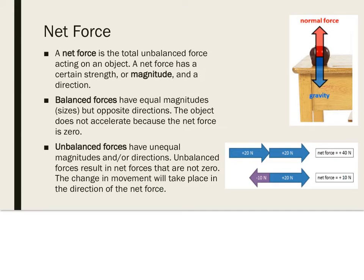Since the apple was not in motion to begin with, it just remains at rest on the table. Then you have unbalanced forces that have unequal magnitudes or sizes and/or directions. Unbalanced forces result in net forces that are not zero, so the change in movement will take place in the direction of the net force.